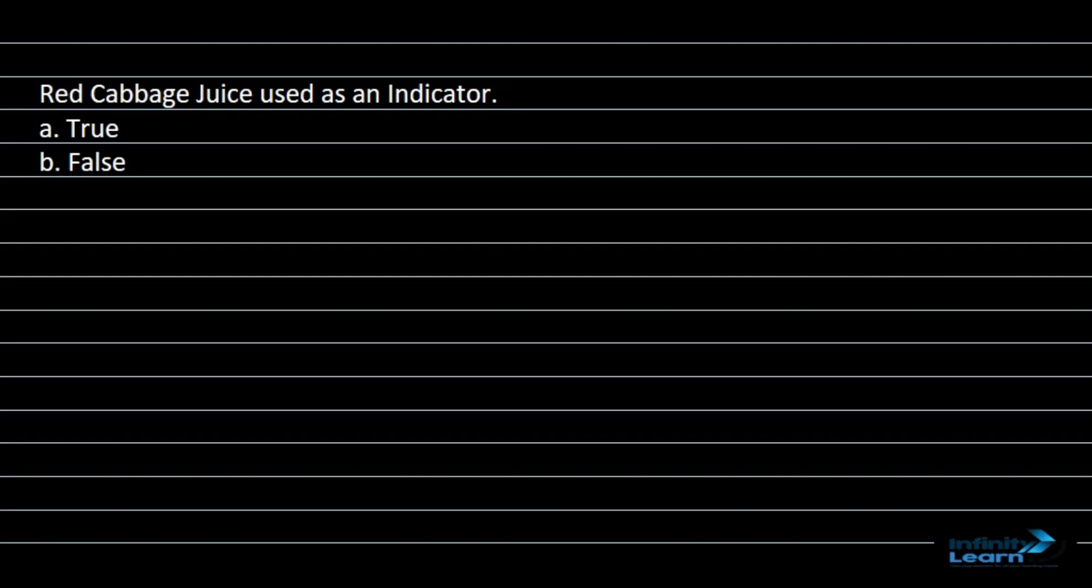Hello students. The question says red cabbage juice is used as an indicator. This statement is given and we have to tell whether it is true or false.